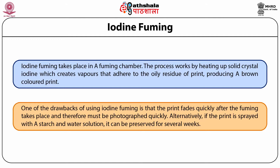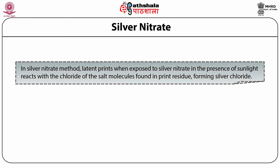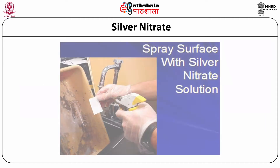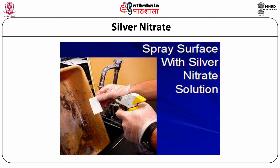Alternatively, if the print is sprayed with a starch and water solution, it can be preserved for several weeks. In the silver nitrate method, latent prints exposed to silver nitrate in the presence of sunlight react with the chloride of the salt molecules found in print residue, forming silver chloride. When exposed to ultraviolet light, silver chloride turns black or brown making the print visible. This method works particularly well on impressions left in cardboard and paper-like surfaces.